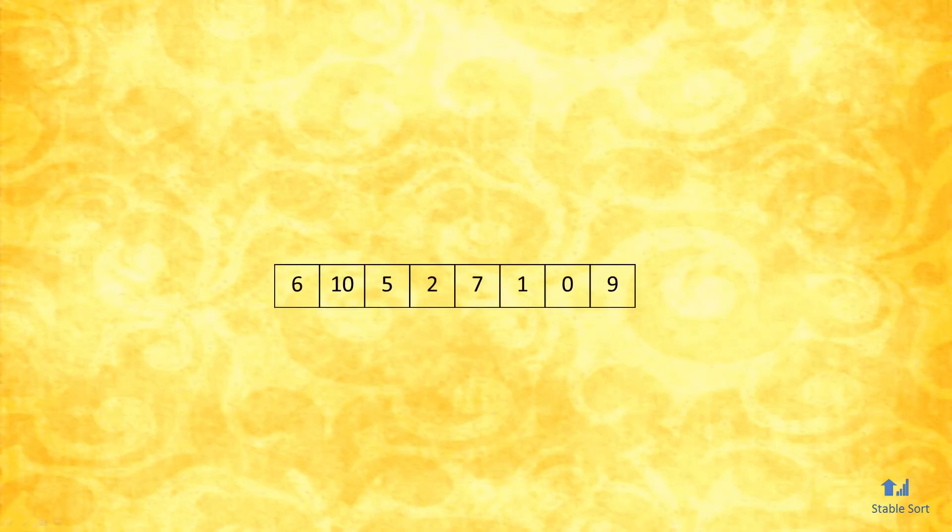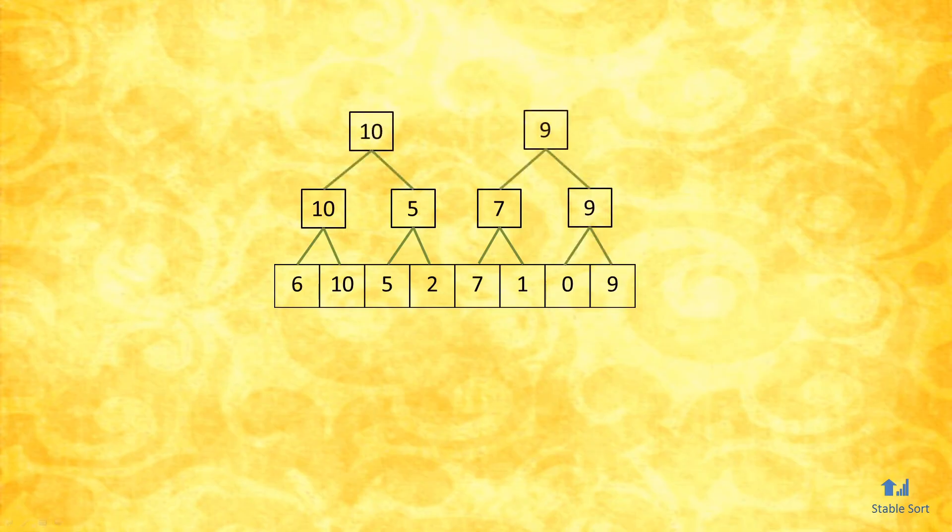Suppose we have an input array with these numbers. We'll start off with an array of length 8, which is a power of 2, to make the example easier to follow. But later on, you'll see that the algorithm works for any size array. We now compute the max between each sequential pair. So the max between 6 and 10 is 10, the max between 5 and 2 is 5, and so on. Once we're done with the first level, we repeat the operation for the next level up, and so on until we find the max across the whole array.